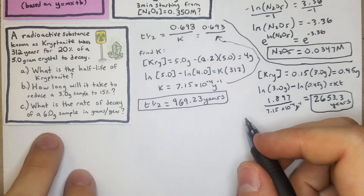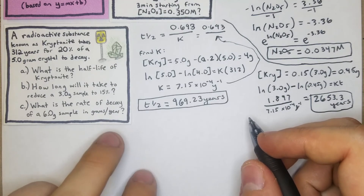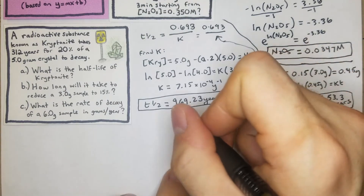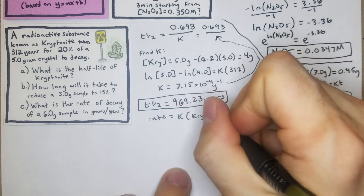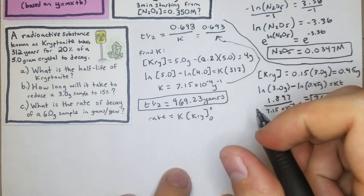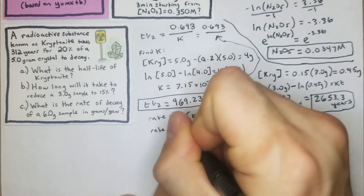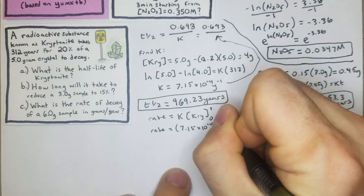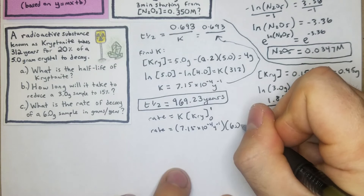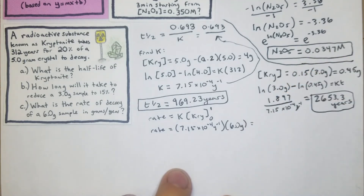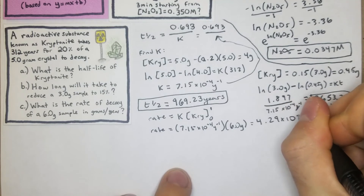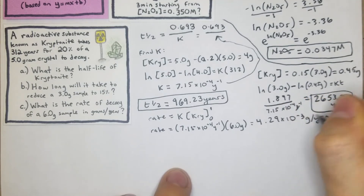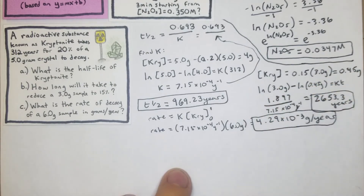For Part C, the rate of decay of a six-gram sample: rate equals k times the initial amount. Rate = 7.15 × 10⁻⁴ per year times 6 grams, which gives us 4.29 × 10⁻³ grams per year. That wraps up the kryptonite problem.